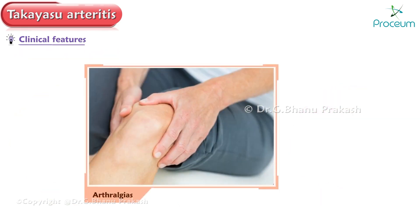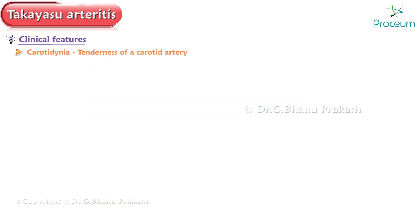Next are arthralgias. Arthralgias or myalgias occur in about one-half of cases. There is also carotidynia — tenderness of a carotid artery, known as carotidynia — which is observed in 10-30% of patients at presentation.